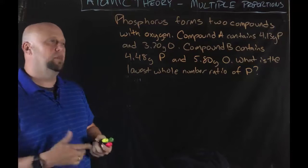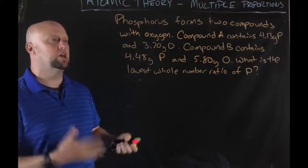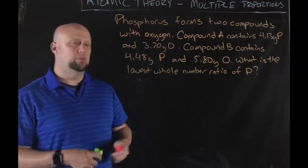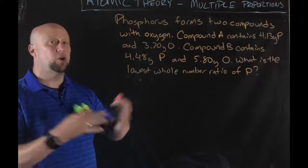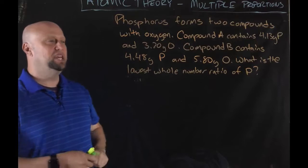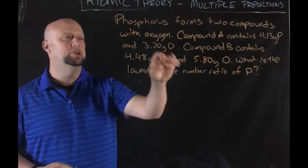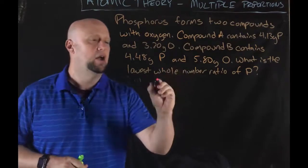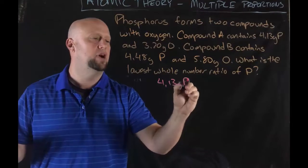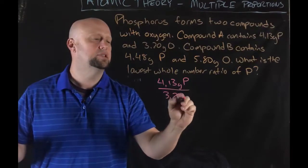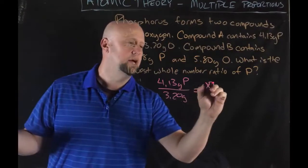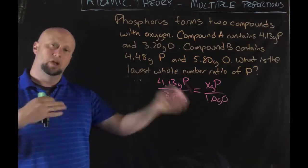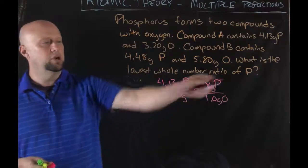Phosphorus forms two compounds with oxygen. Compound A contains 4.13 grams of phosphorus and 3.2 grams of oxygen. Compound B contains 4.48 grams of phosphorus and 5.8 grams of oxygen. What's the lowest whole number ratio of P? The good news is that you like to work problems out in ratio and proportion, and that's pretty much all it is. The first thing we're going to do is reduce our oxygens down to being one gram each. It's easier if you reduce that first element, the one that you're not trying to compare, which is oxygen in this case, to one.